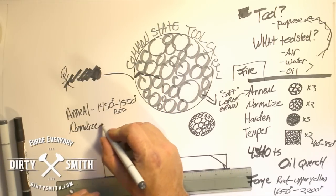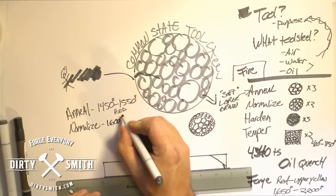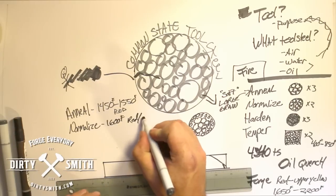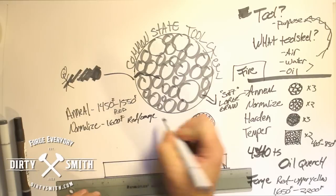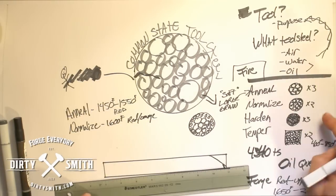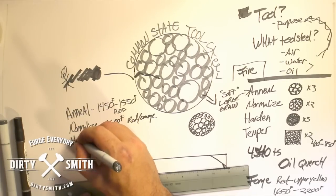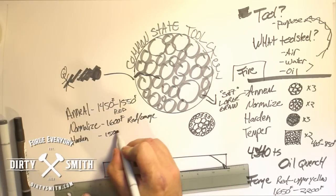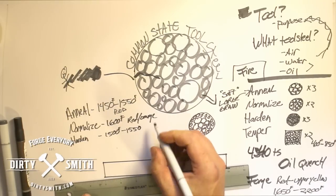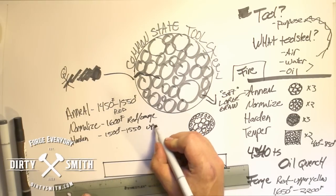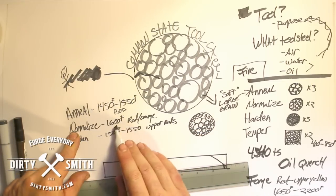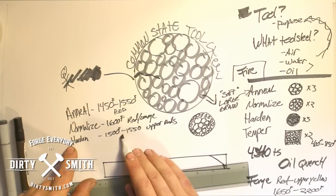The normalizing temperature literature says is 1600 and that's a red going into an orange. After I would forge it, I normalized it, and again doing normalizing about twice. Hardening temperature we're going 1500 to 1550, pretty small window there. This is the upper reds.